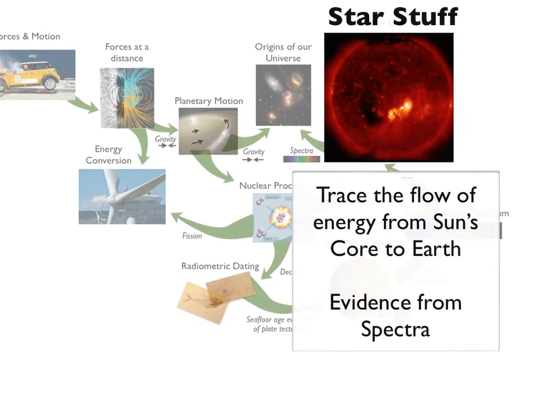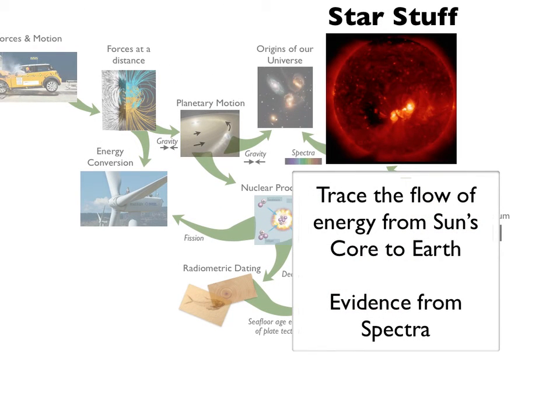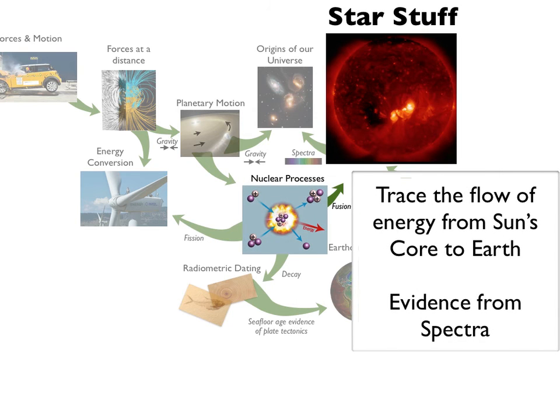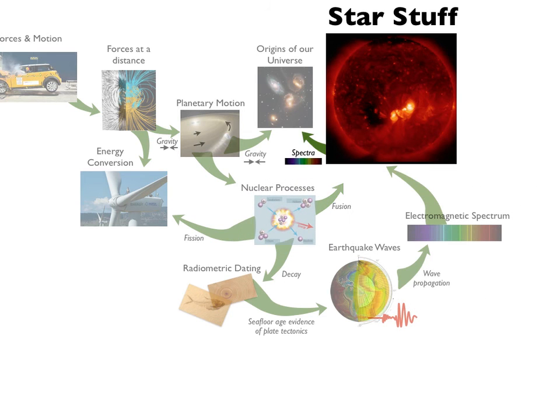Turning their attention upwards to the sky, students learn to analyze data from the electromagnetic spectrum to understand the processes going on in stars. They trace the flow of energy from Sun's core outward, which means they have to extend their model of nuclear processes to include fusion, and use it to develop a model for the life cycle of stars. They learn to support these models using evidence from the spectra of light.